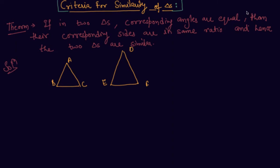Here is a theorem which states that if two triangles are similar, then the corresponding angles are equal and the corresponding sides are in equal ratio. I will give a proof. Here are two triangles ABC and DEF. Let me draw a line parallel to EF in which DP equals AB and DQ equals AC.